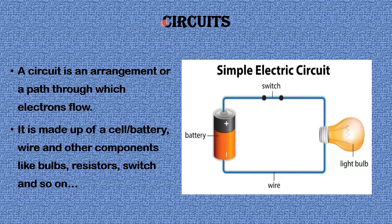A circuit is an arrangement or path through which electrons flow. It is made up of a cell or battery, wire, and other components such as bulbs, resistors, and a switch. Here is a diagram of a simple electric circuit, made up of a wire, a cell or battery, a bulb, and a switch.